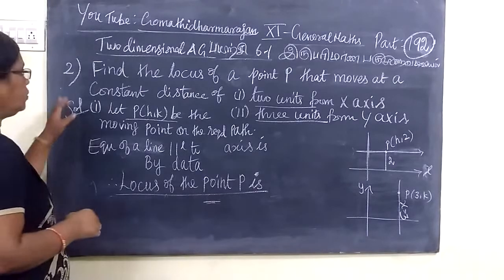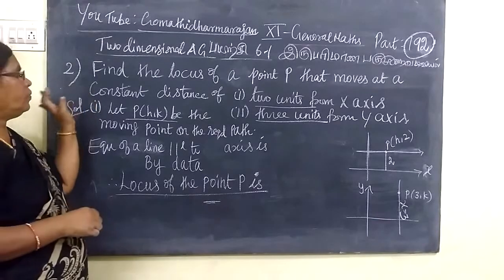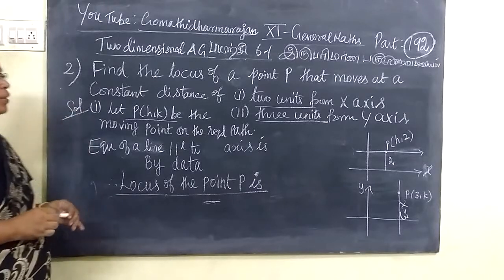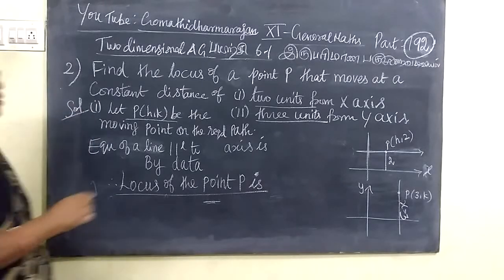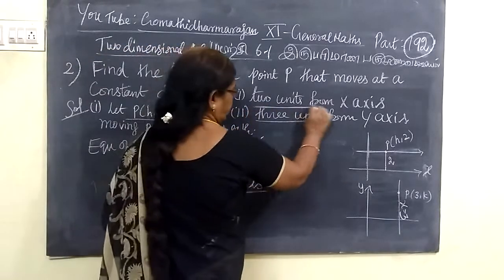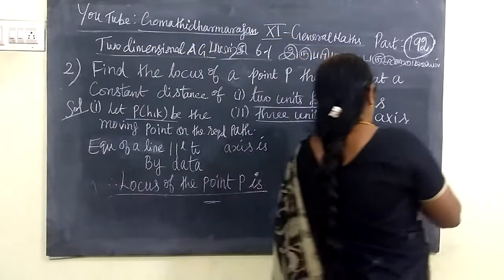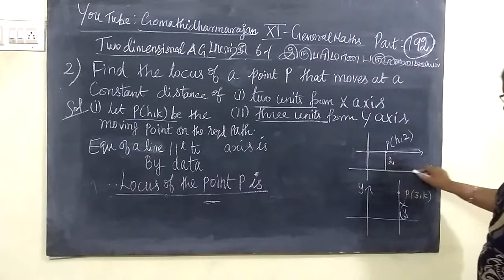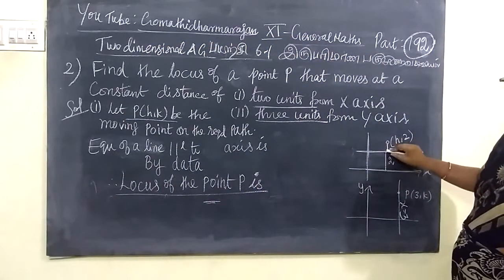We are going to find the locus of a point that moves at a constant distance of 2 units from the x-axis. What is the point? The x-axis is 2 units distance.